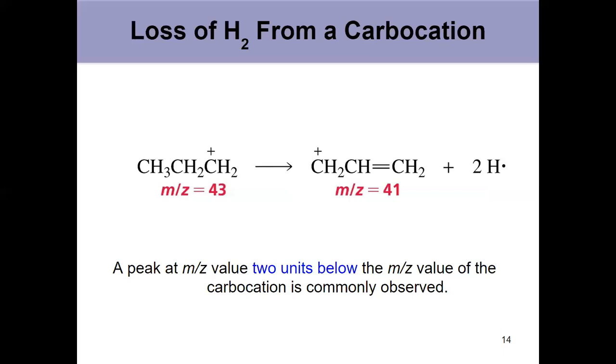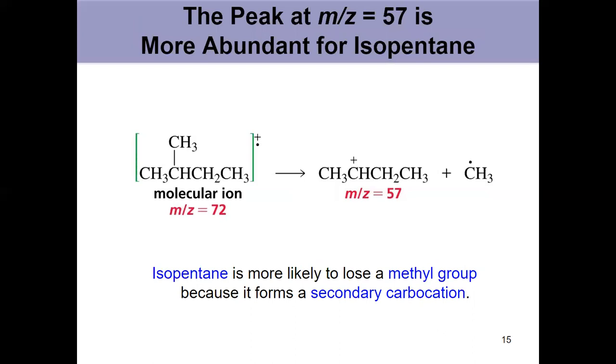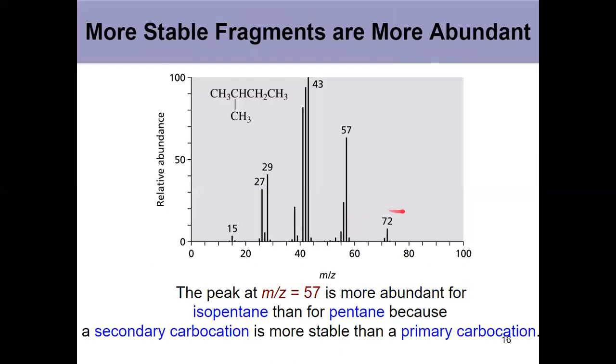The fragmentation will tell you information about the structure because pentane isn't the only way to do C5H12. We could have isopentane instead. Pentane and isopentane have different mass spectrums. For isopentane, the peak at 57 is most abundant because it's a secondary carbocation. So even though we both have a molecular ion at 72, fragmentation patterns will give me information about the structure.